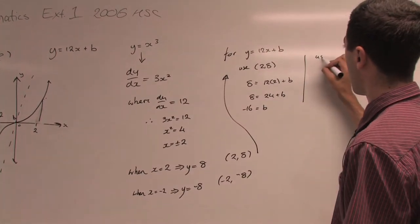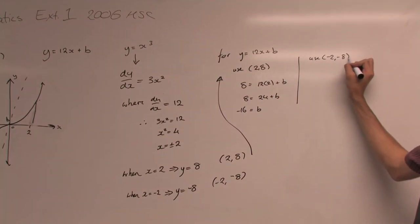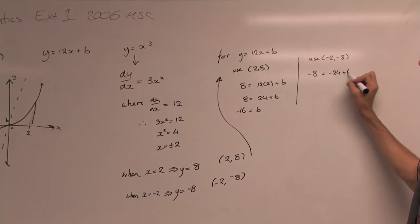And doing it again with our other point (-2, -8), we'll get -8 = -24 + b, so then b = 16.